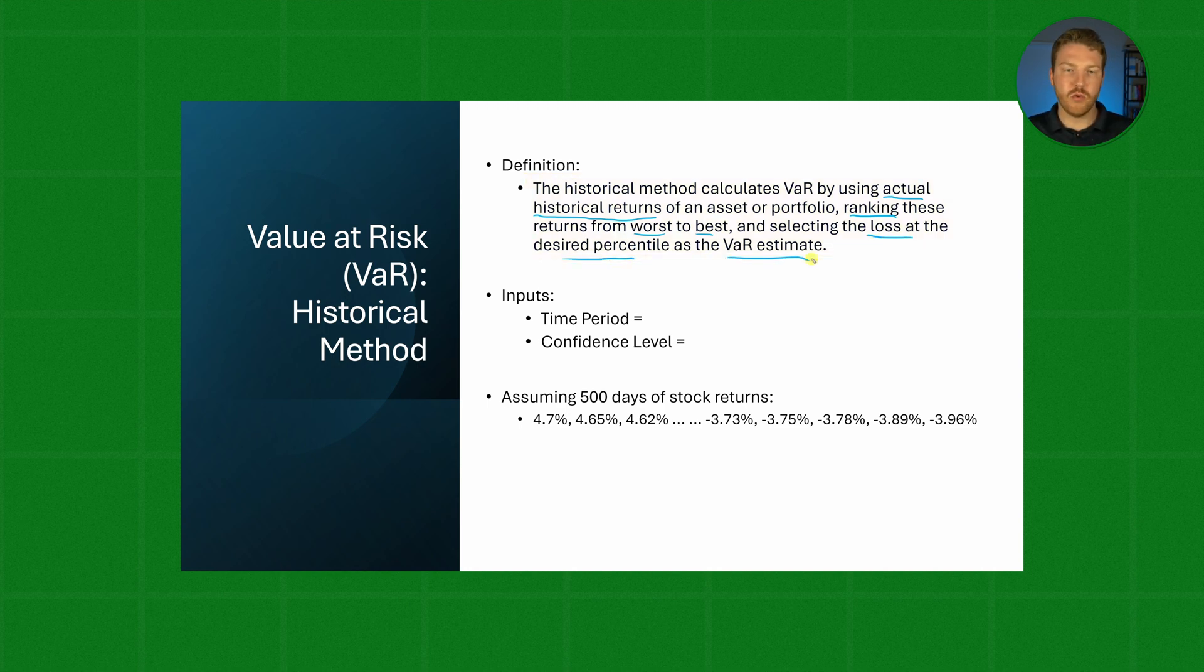So let's walk through an example. Now we have these inputs. Let's assume for the time period that instead of one year we're actually looking for our one day VaR. And now for our confidence level let's say we're looking for a 99 percentile confidence level. And then we gathered actual historical returns from the last 500 trading days and we sorted them all and we ended up with this order.